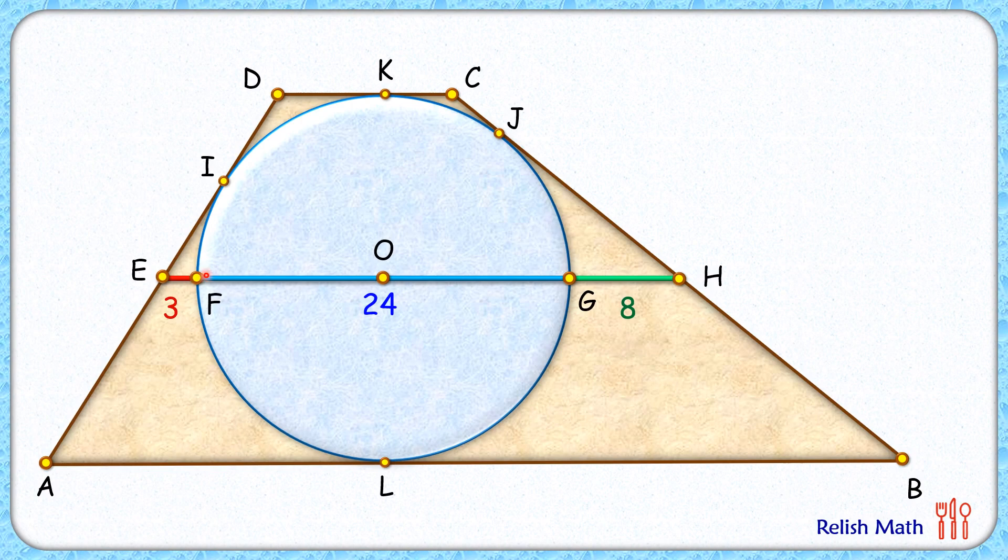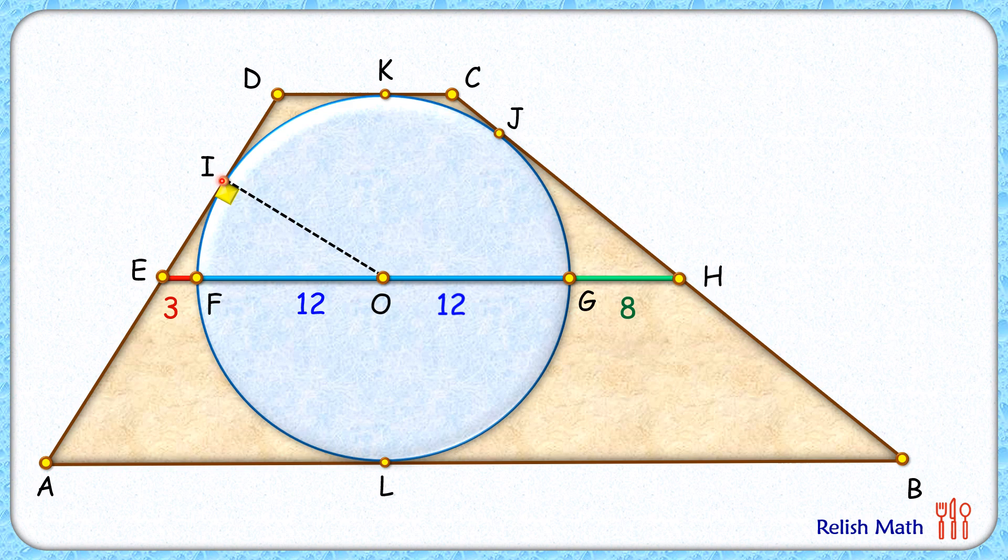Let's check the solution. Here this length FG is the diameter of the circle and thus the radius of the circle is 12 cm. Let's join the center to point of tangency I. The radius is perpendicular to the tangent, thus this angle is 90 degrees. This length IO is the radius which is 12 cm.